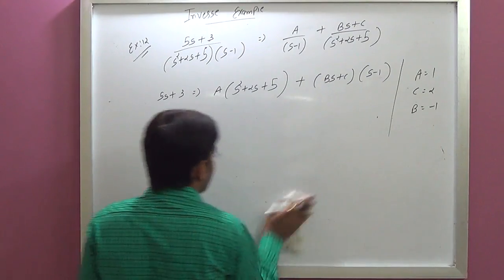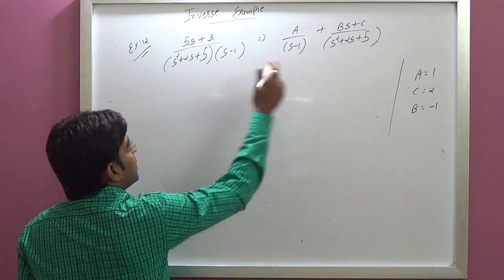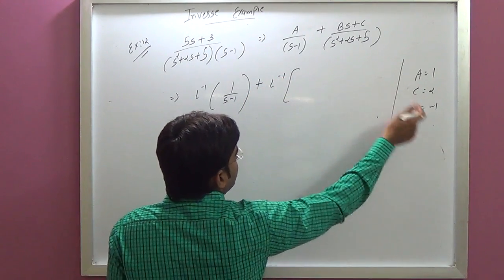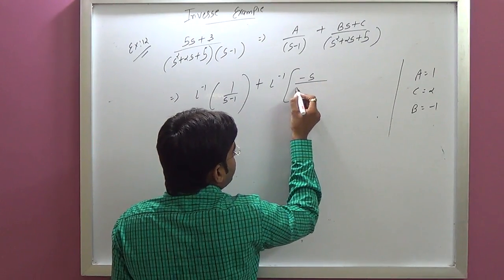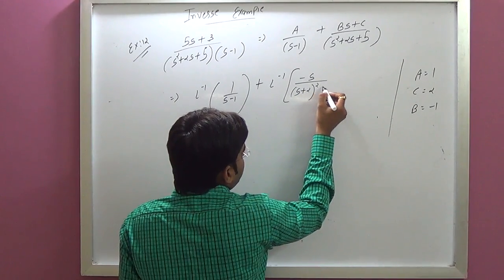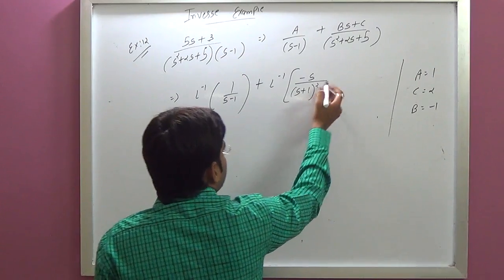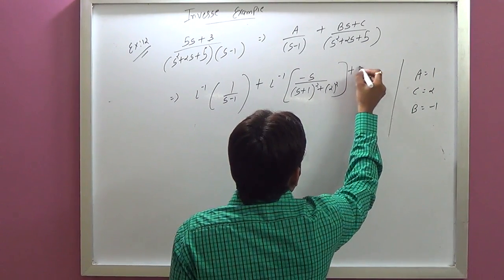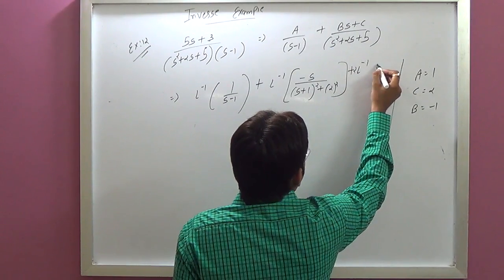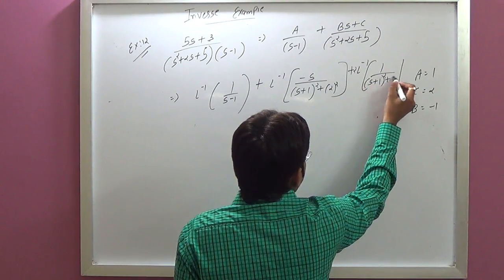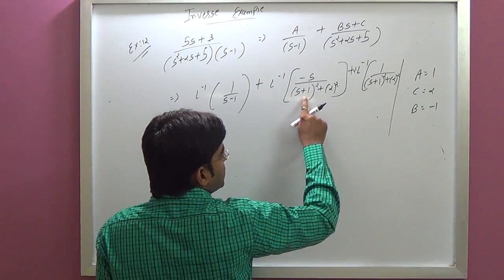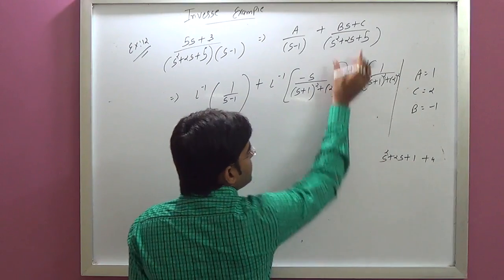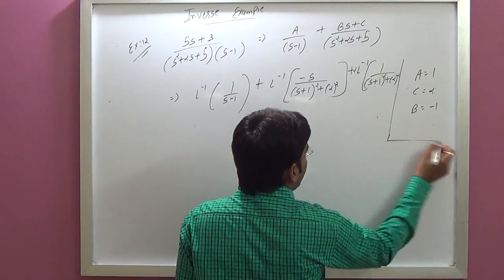We put all values A equals 1, B equals minus 1, C equals 2 back. The inverse Laplace of 1/(S minus 1) gives e^t. For (minus S plus 2)/(S² + 2S + 5), we complete the square: S² + 2S + 5 equals (S plus 1)² plus 2², so we apply the shifting formula with S plus 1.